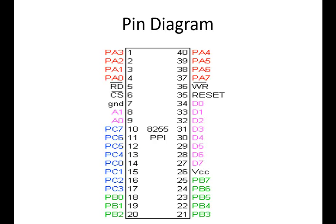Pin 26 is VCC or voltage supply. Pins 27 to 34 are data lines, going from D0 (data 0) to D7 (data 7). Pin 35 is reset and pin 36 is write. The read, chip select, and write signals — at pins 5, 6, and 36 — have a bar over them, which denotes that they are active low. So when the input voltage is low, the read, chip selection, and write functions are activated.